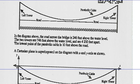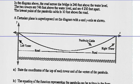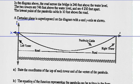They superimposed a Cartesian plane on the diagram with x and y axes as shown. A Cartesian plane is just a coordinate grid with x and y axes on it. Here's our x-axis and y-axis, with the origin at point (0, 0). Let's state the coordinates of the top of each tower and the vertex of the parabola.